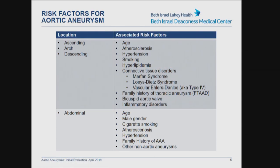In terms of risk factors for aortic disease, age is significant regardless of whether it's in the abdomen or in the ascending, arch, or descending aorta. Atherosclerosis, hypertension, smoking, and hyperlipidemia are also associated risk factors. When speaking of ascending, arch, and descending aneurysms, connective tissue disorders may be prevalent, including Marfan syndrome, Loeys-Dietz syndrome, and vascular Ehlers-Danlos syndrome.